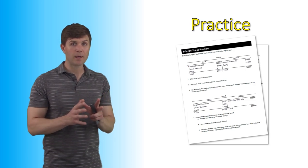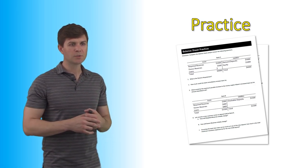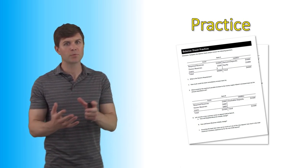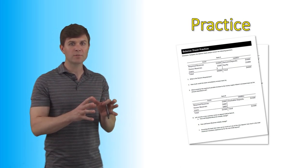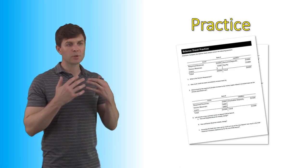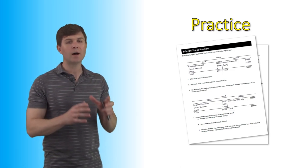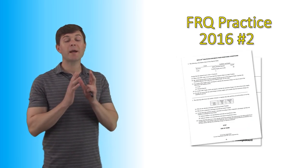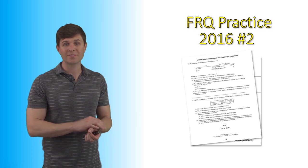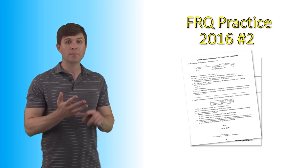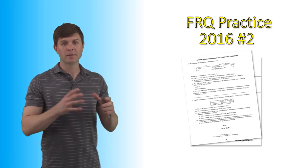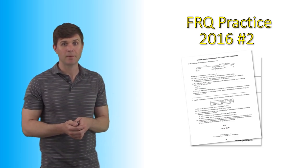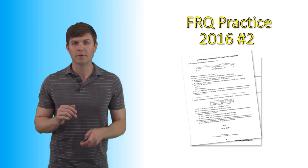I've got some practice problems to go over — four different balance sheets with questions covering immediate versus overtime, and bond purchases versus demand deposits. Give this some time, put in some effort, try it out, and then watch the next video to go over it together. Also check out my FRQ video from 2016, question number two — it's a balance sheet T-account question that runs through this type of scenario you might see on the AP exam.